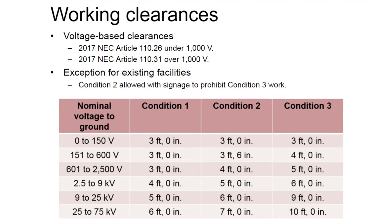Working clearances can be found in NEC Articles 110.26 and 110.31. NEC references operating voltages to ground, not line to line — that's important for designers, engineers, and facilities to understand. For low voltage systems under 50 volts, there is an exception with AHJ approval. The authority having jurisdiction can approve a reduction in working clearances for low voltage systems, which can commonly apply to mechanical controls for fire dampers and VAV boxes located above a ceiling where maintaining the condition one three-foot zero-inch clearance can be difficult.